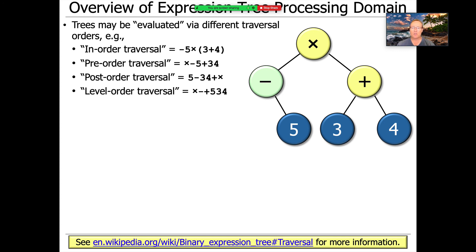So you get times minus five plus three four. You can do post-order traversal, where you visit the tree as you go by on the right-hand side. So that would be five minus three four plus times. And then there's even something called level order traversal, which is not really mathematically viable, but is known as something called breadth first search.